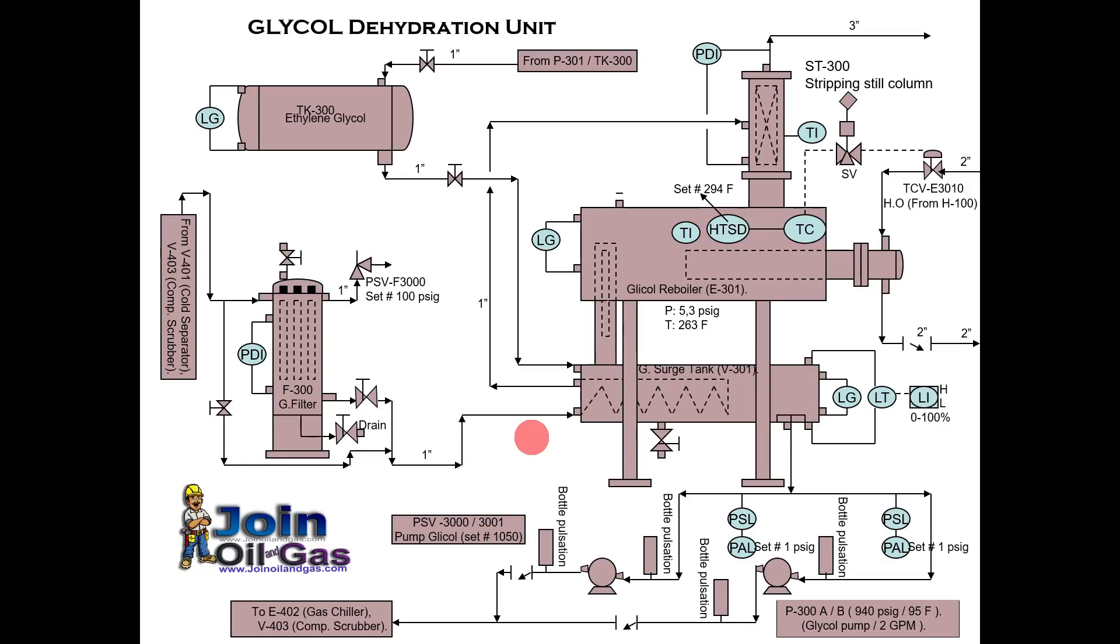So before starting, let's give you an idea of this unit. This unit is a part of gas processing plant. This is a unit that is used to remove the water vapors from the natural gas, and in this process triethylene glycol or diethylene glycol is used.